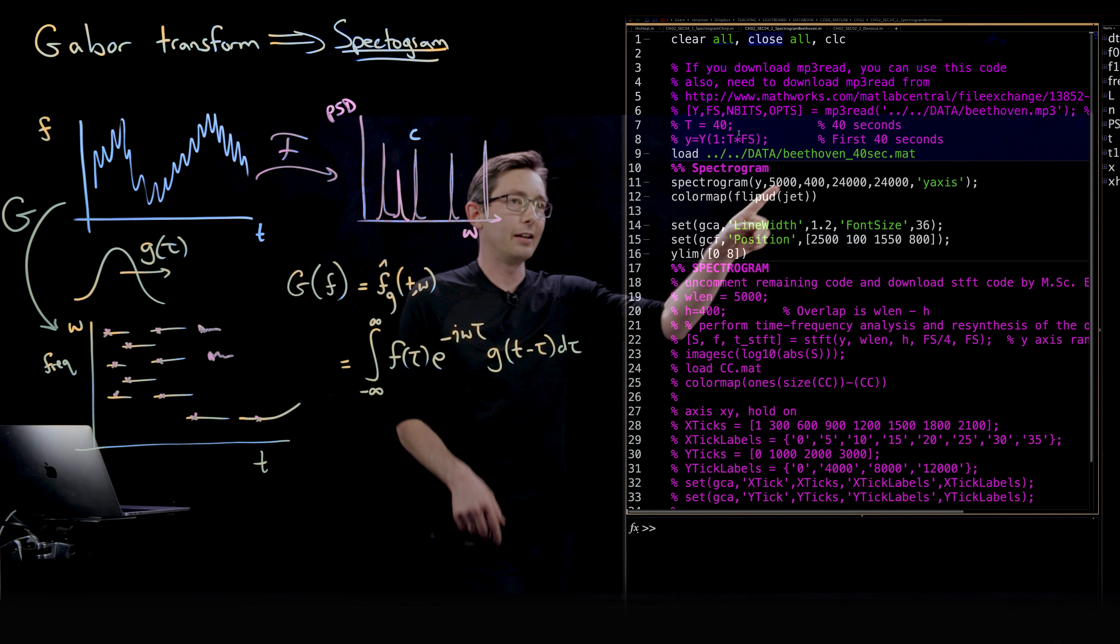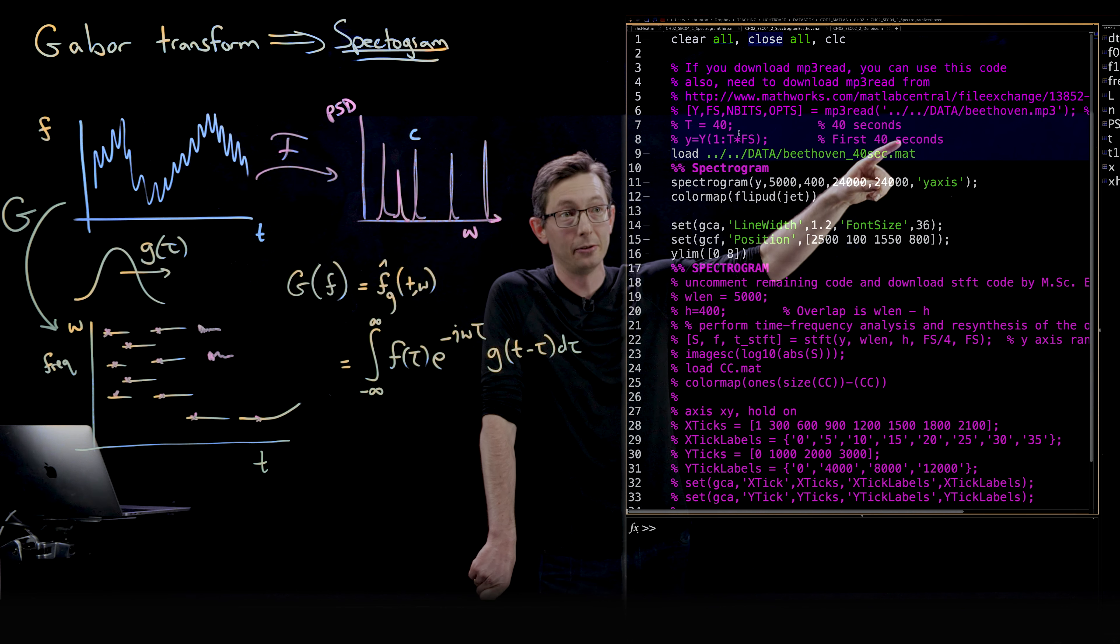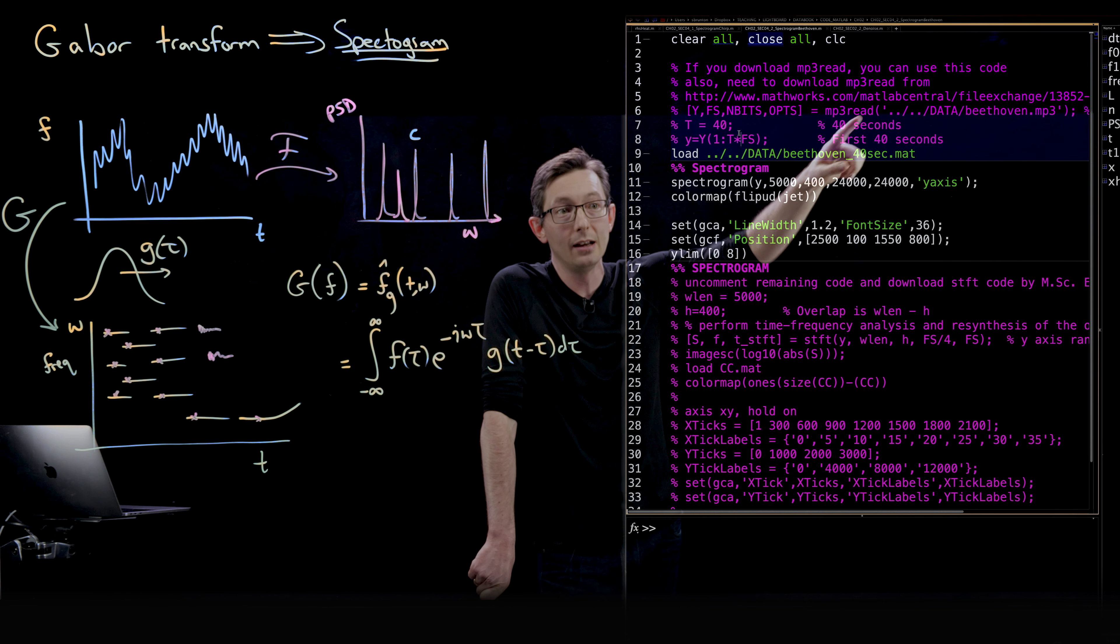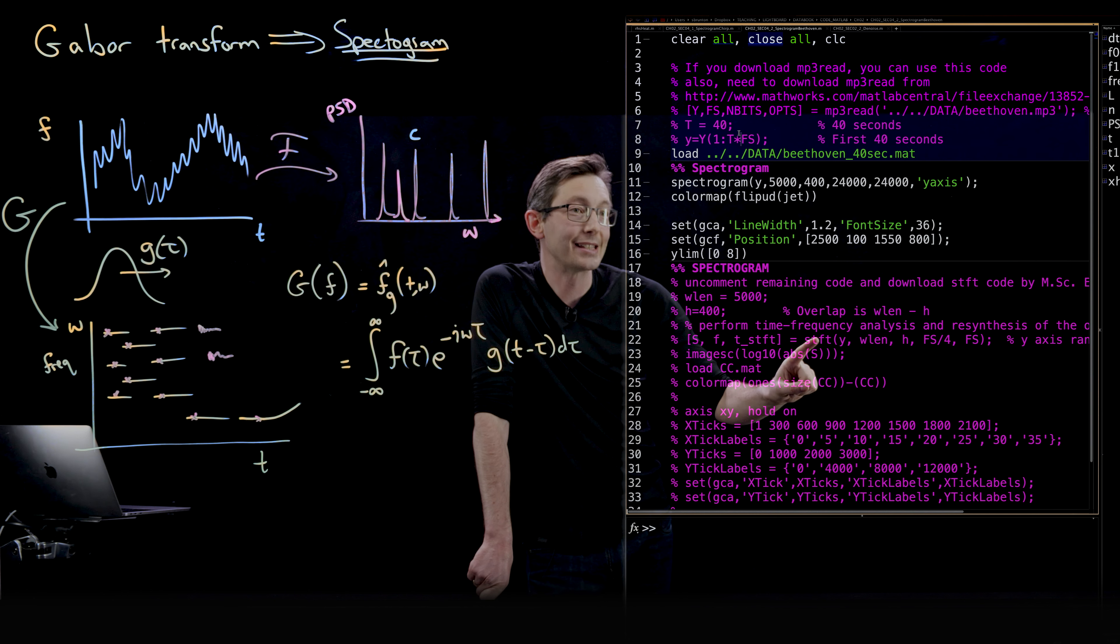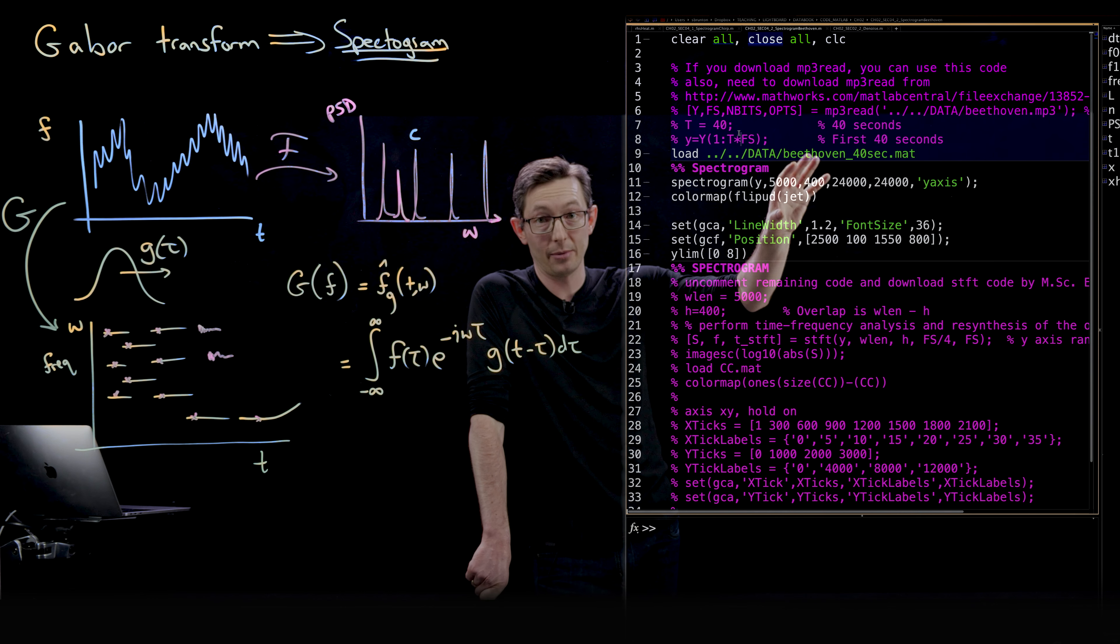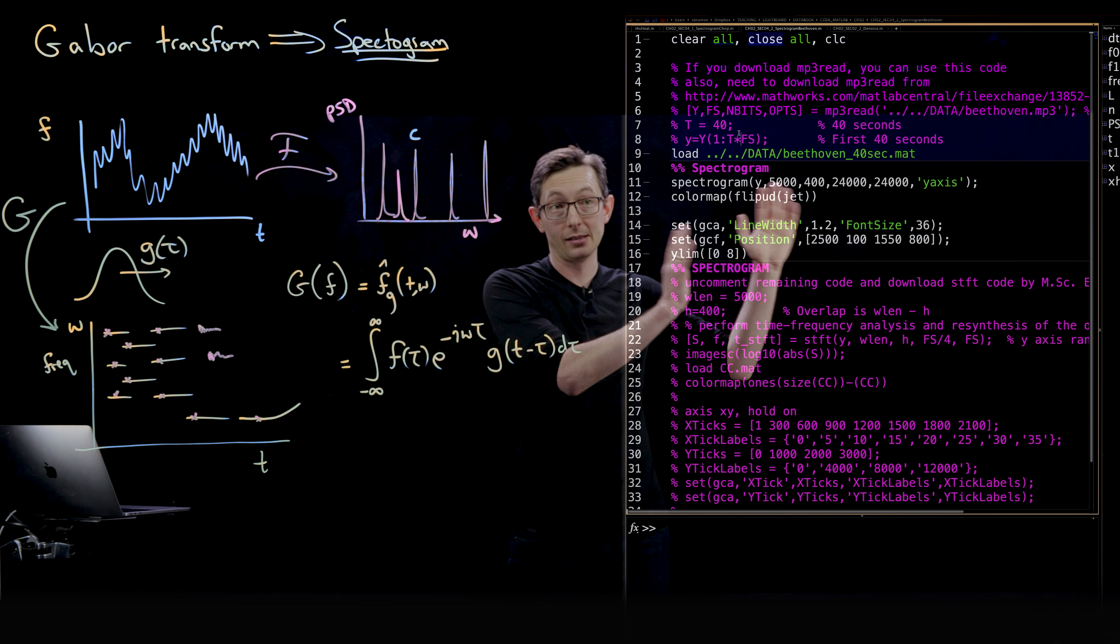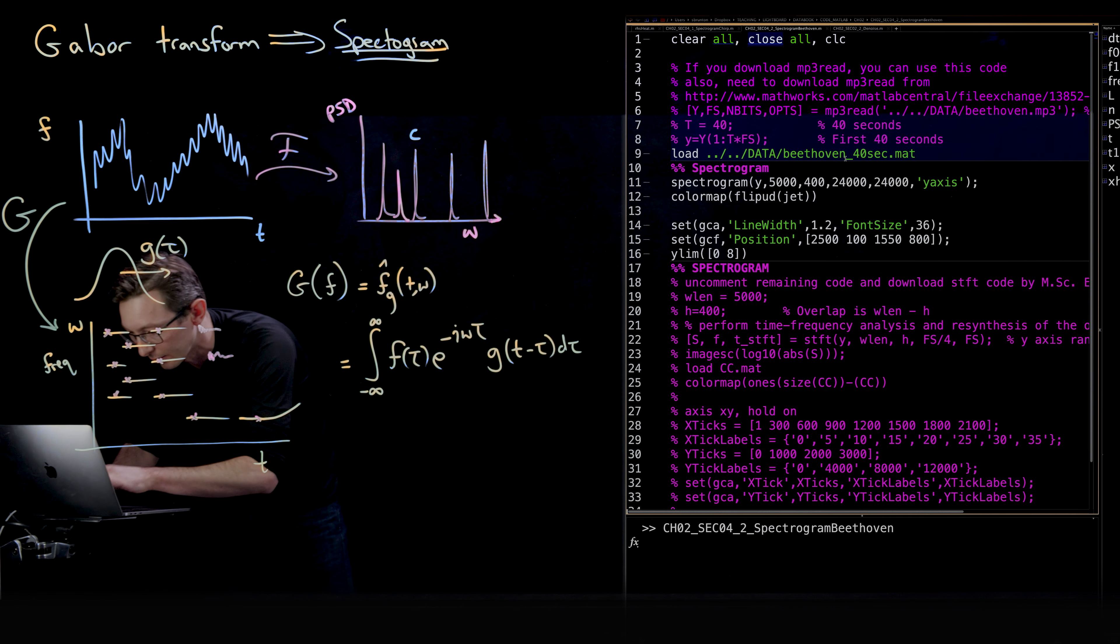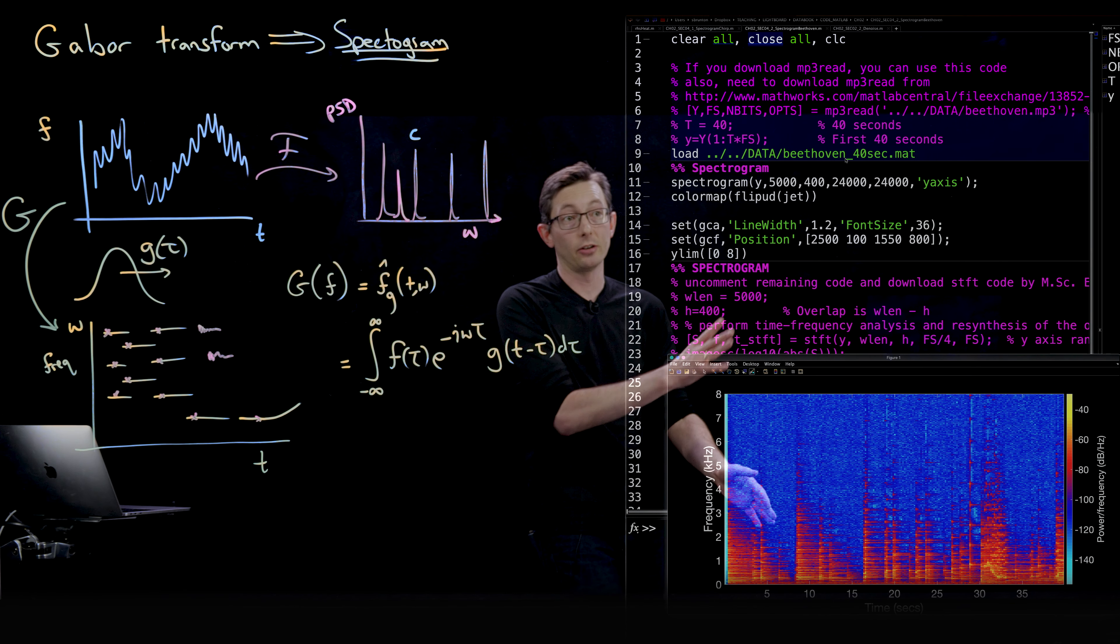Here I have a Beethoven, the Beethoven Sonata that I pulled from an MP3 and converted the first 40 seconds into this mat file. I have a bunch of commented out code here that you could use to pull out the MP3 file using MP3 read. I also have all of this code here that shows you how you could actually compute the spectrogram yourself using this STFT, the short time Fourier transform. This is kind of the guts of the spectrogram code that you could work yourself. But here I'm just going to show you the one line spectrogram output for the first 40 seconds of this Beethoven Sonata.